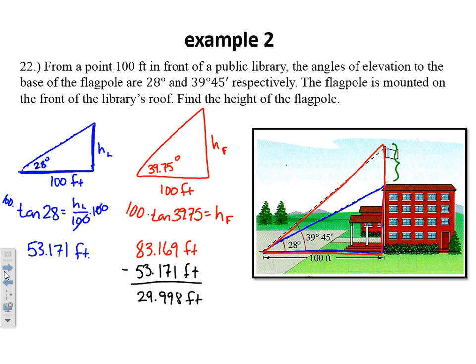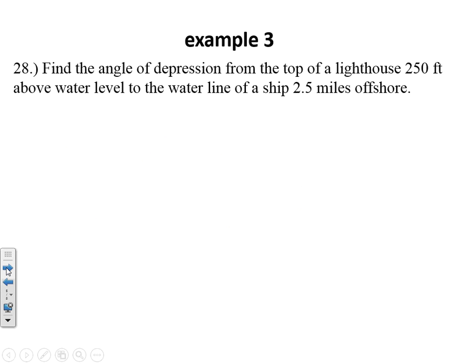So if I take the difference of those, so I take my 83.169 and subtract away my 53.171, I get a height of just a little under 30, 29.998 or something like that. So that's a 30 foot flagpole. The flagpole itself is about three stories tall. You might need to put a light on the top so that low-flying aircraft don't hit that flagpole.